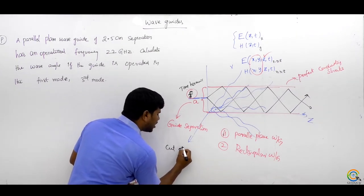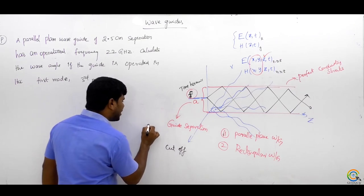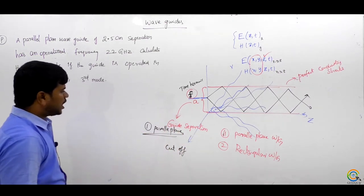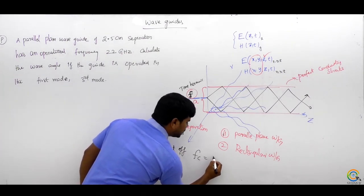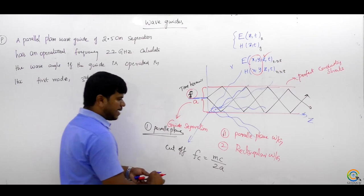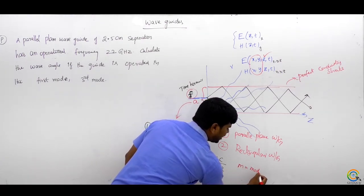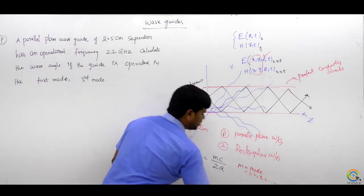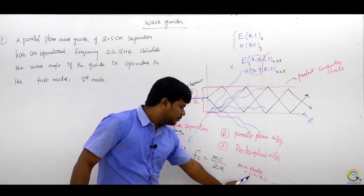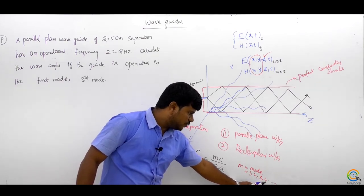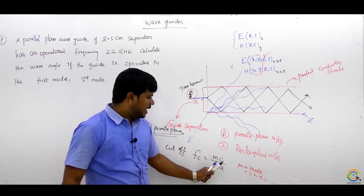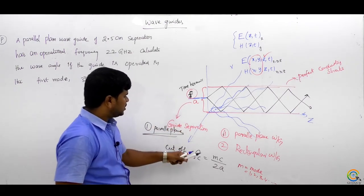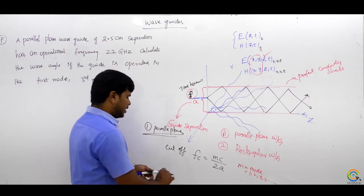For the parallel plane waveguide, the cutoff frequency is fc = mc/2a, where m is the mode number (1, 2, 3, 4...), c is the light velocity (3×10⁸ m/s), and a is the guide separation. This uses c when the space between the two conducting materials is free space.